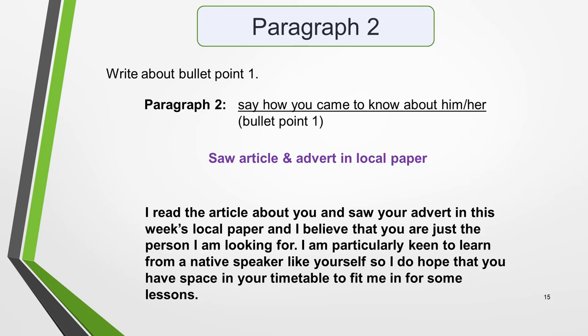In the second paragraph, you write about bullet point 1, which is to say how you came to know about the teacher. My idea for this is that I saw an article and an advert in the local paper. Remember to keep the language formal. Aim for around 50 words for paragraphs 2, 3, and 4. You could write something like: 'I read the article about you and saw your advert in this week's local paper, and I believe that you are just the person that I am looking for. I am particularly keen to learn from a native speaker like yourself, so I do hope that you have space in your timetable to fit me in for some lessons.'